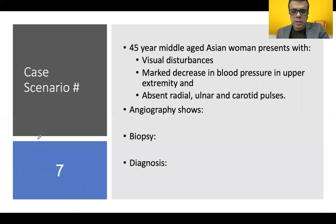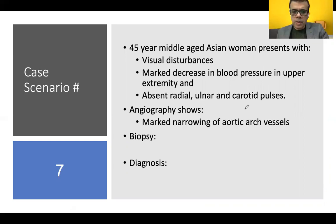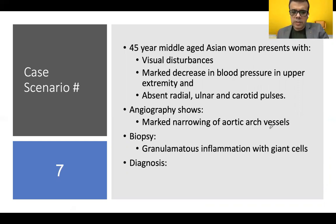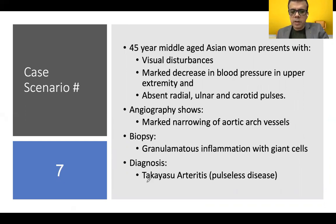A 45-year-old middle-aged Asian woman presents with visual disturbance and marked decrease in blood pressure in the upper extremity. There are absent radial, ulnar, and carotid pulses. Angiography shows marked narrowing of aortic vessels, and biopsy reveals granulomatous inflammation with giant cells. The confirmed diagnosis is Takayasu Arteritis, or pulseless disease.